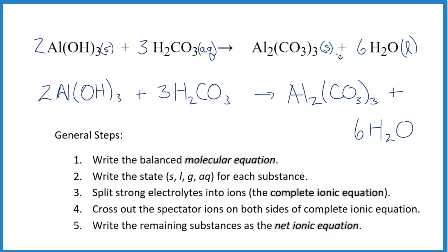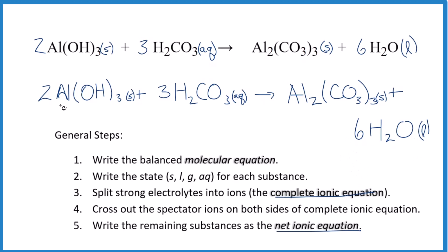Here's the key with net ionic equations: solids, we don't split those apart — so we keep aluminum hydroxide as a solid, and aluminum carbonate as a solid as well. Liquids we don't split into ions either. Now for H2CO3, our carbonic acid — it is aqueous, but remember it's a weak acid. Weak acids we don't split apart in net ionic equations. So it turns out we really can't split anything apart here. Our complete ionic equation is going to be the same as the net ionic equation for aluminum hydroxide plus carbonic acid.